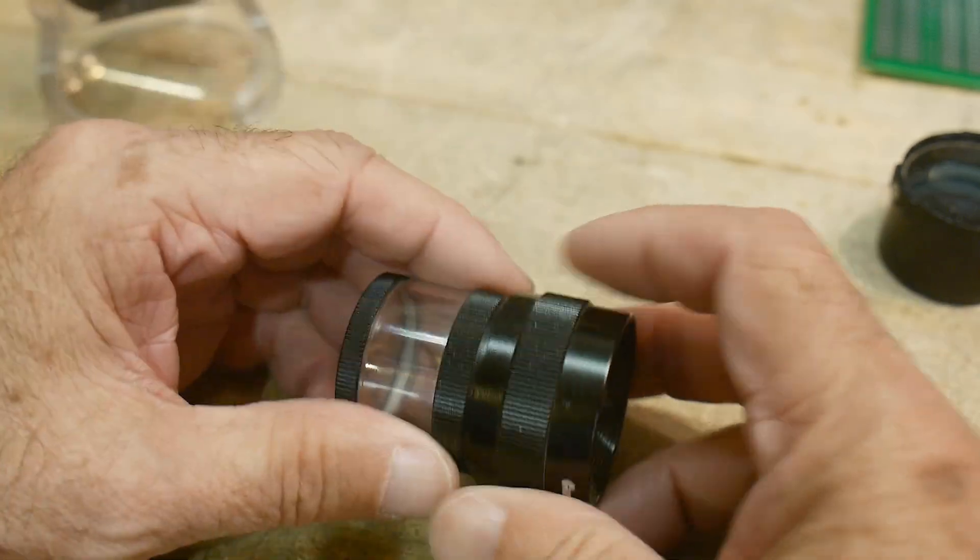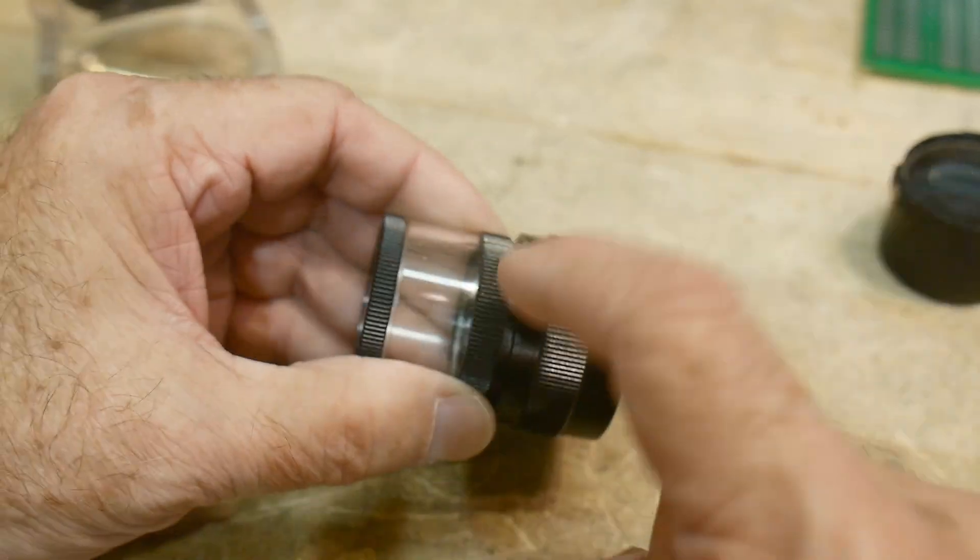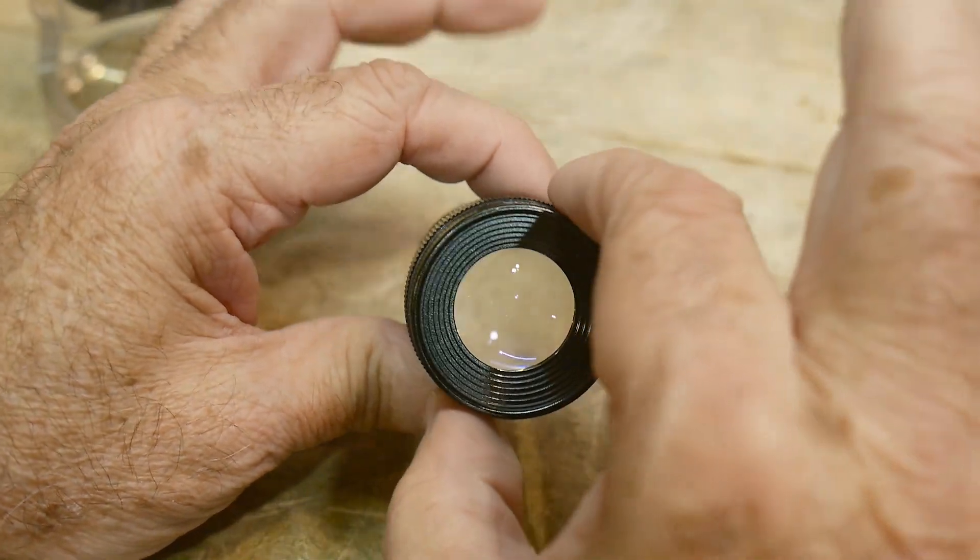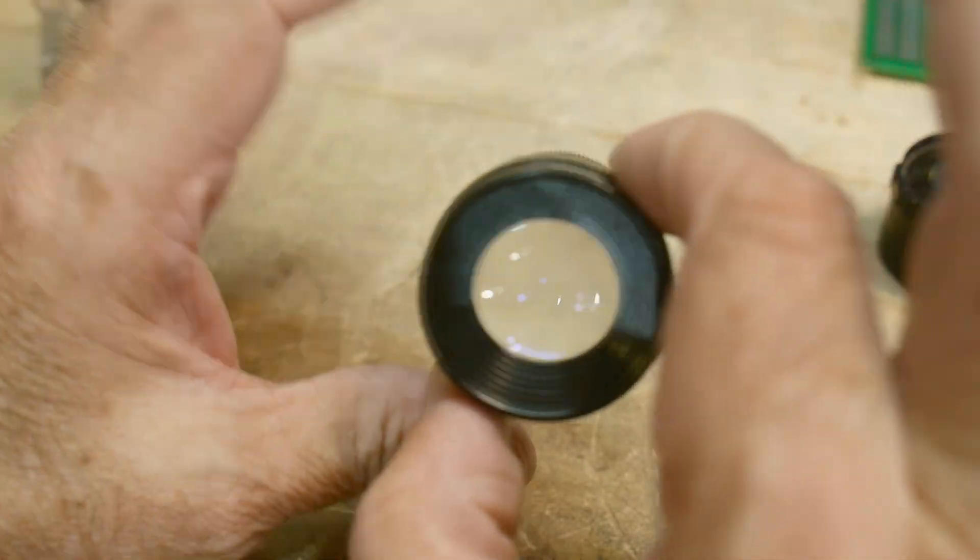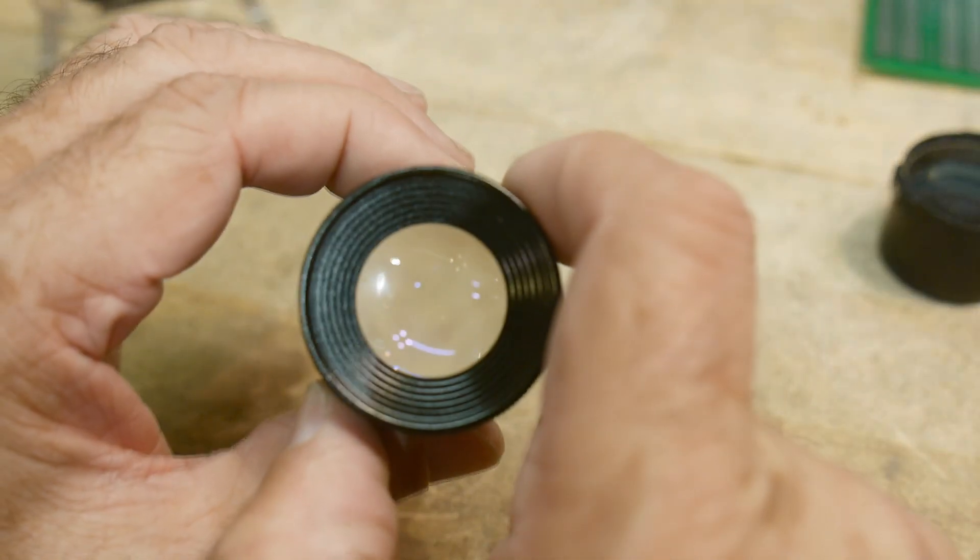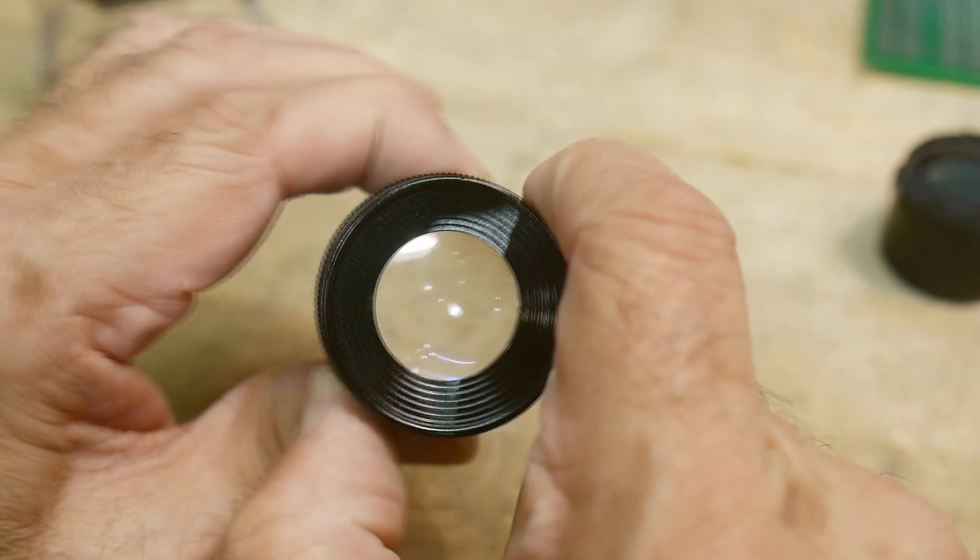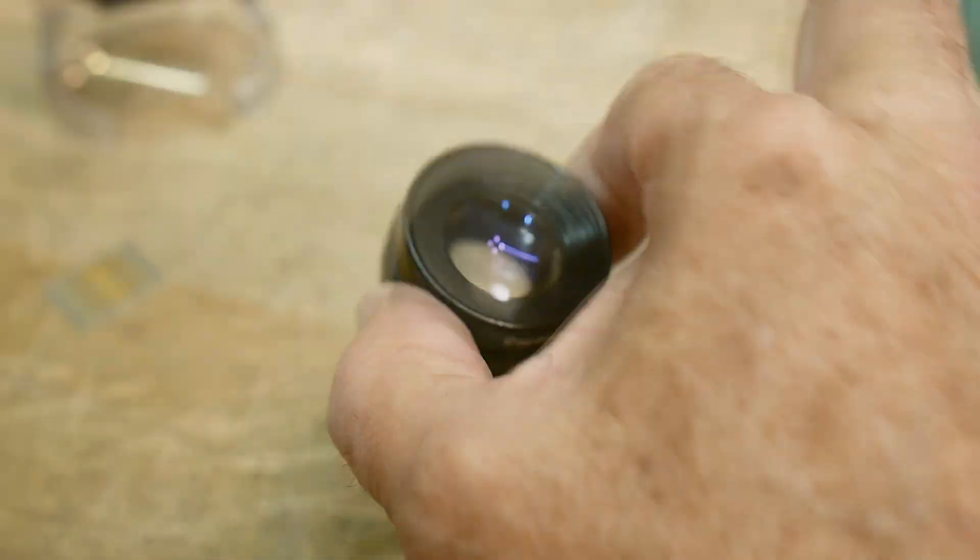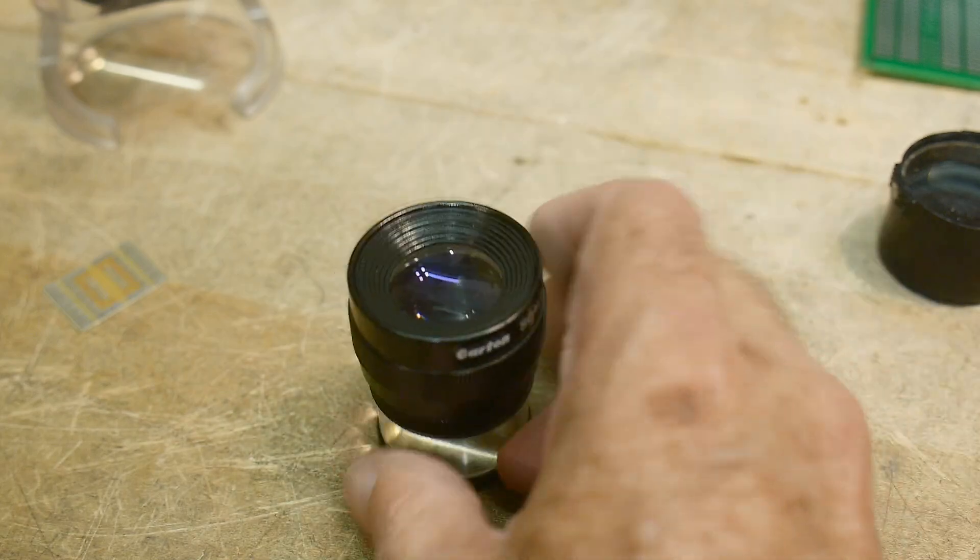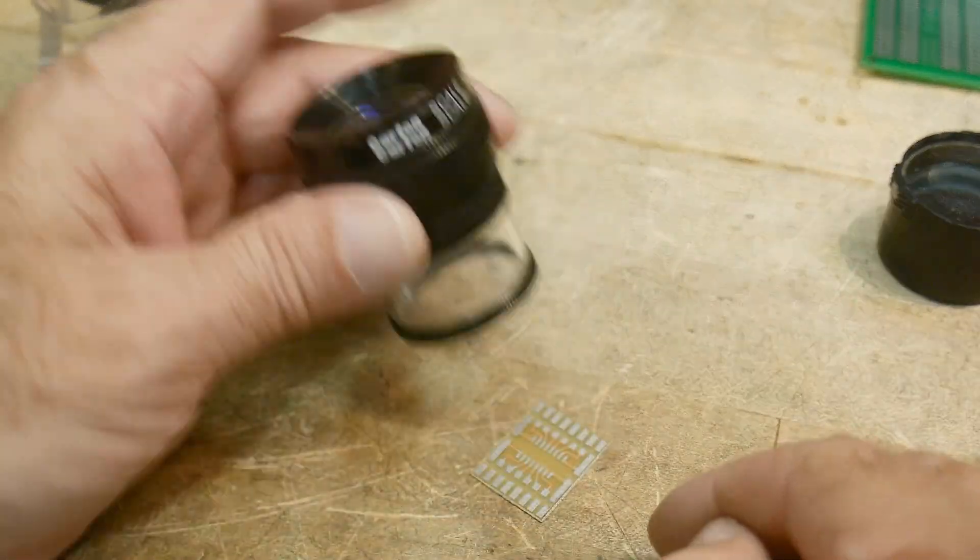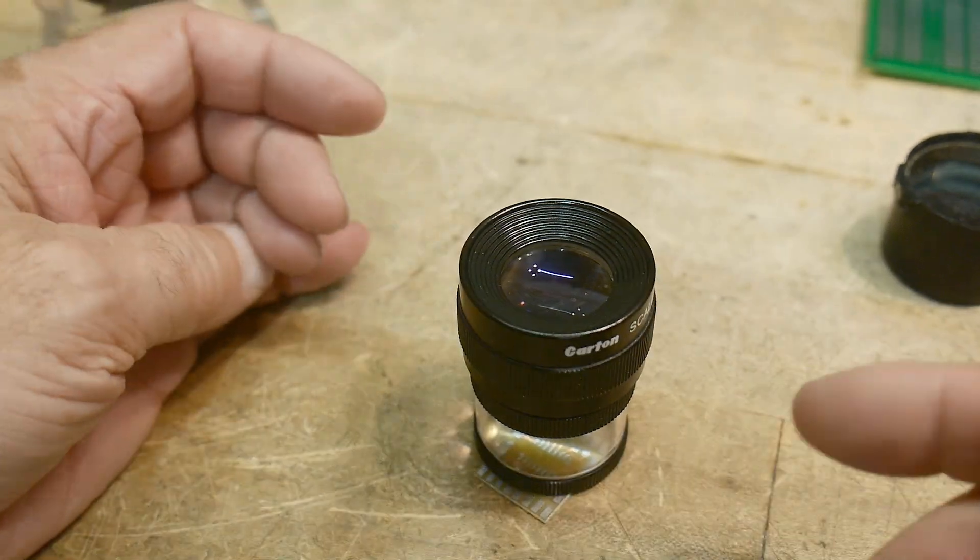When you look through here, turn this so don't look at anything, just have it up in the air and turn this until that little scale in there is in focus. Then you can use it like this, so it's always in focus no matter where you go. And then you can set it on things and measure them. So I'll show you some photographs here.